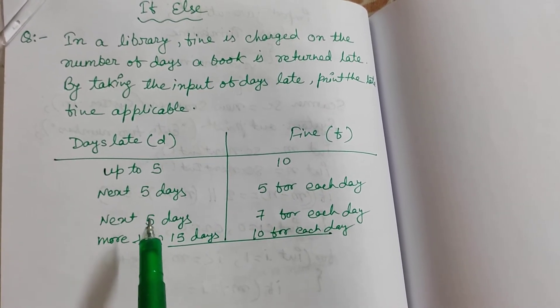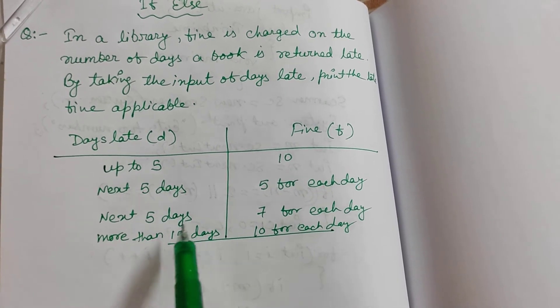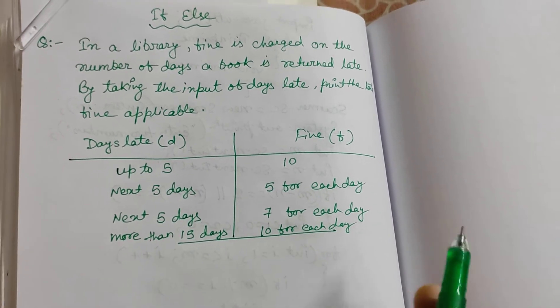Next 5 days, that is 11th day to 15th day, 7 rupees per day. And more than 15th day, that is 16th day onwards, 10 rupees per day you have to pay.